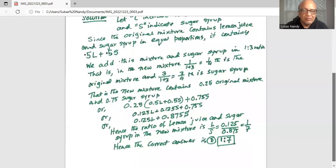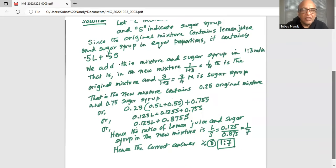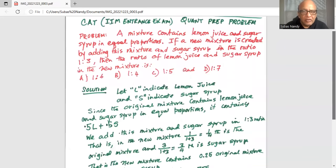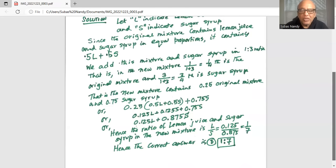Lemon divided by S is 0.125 divided by 0.875, which is 1 is to 7. Hence the correct answer is choice D or alternative D, which is 1 is to 7.